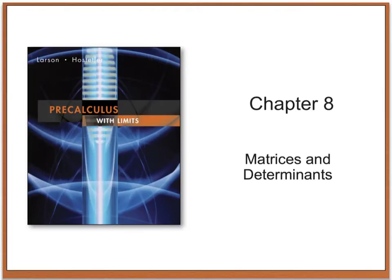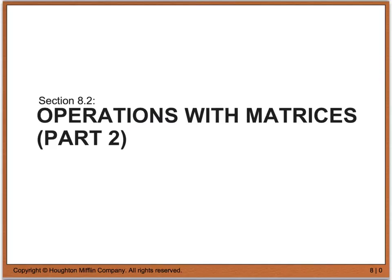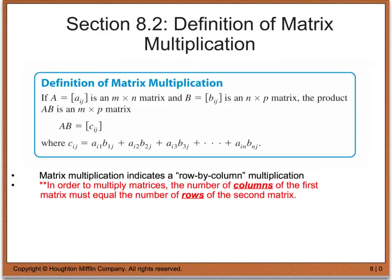Welcome back to part 2 of chapter 8. We're still dealing with matrices and specifically operations with matrices. Today we're going to be looking at matrix multiplication. Matrix multiplication indicates a row-by-column type of multiplication. In order to multiply matrices, the number of columns of your first matrix has to equal the number of rows of the second matrix. If this is not the case, you cannot multiply the two matrices together.